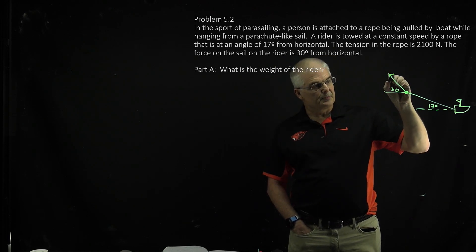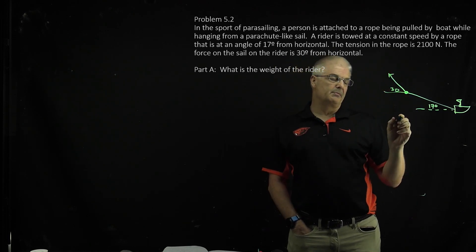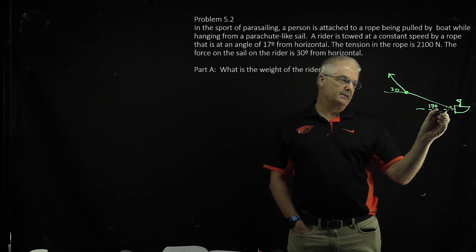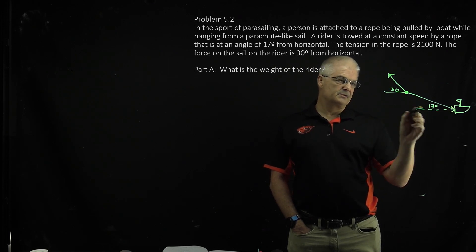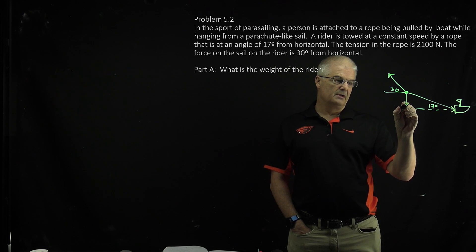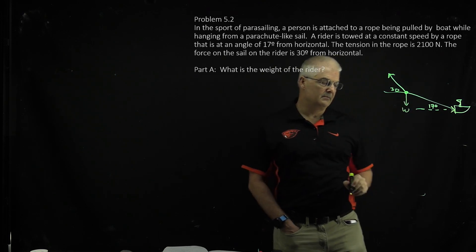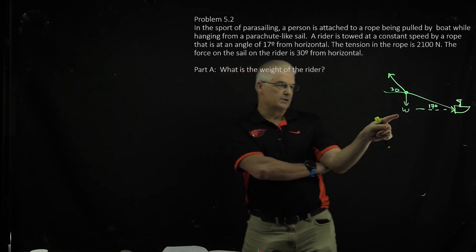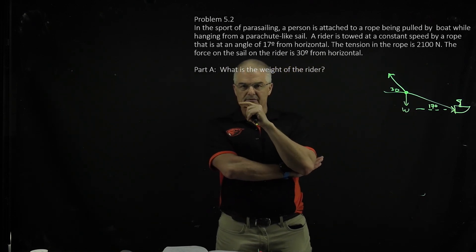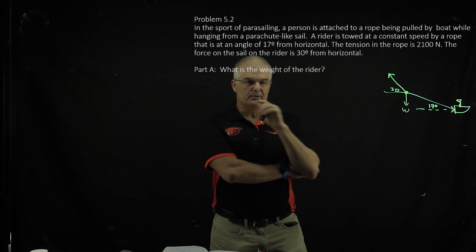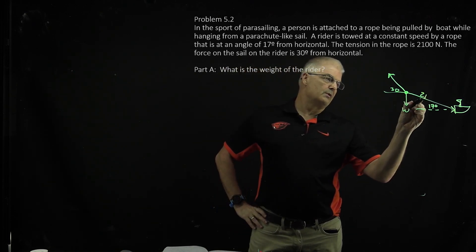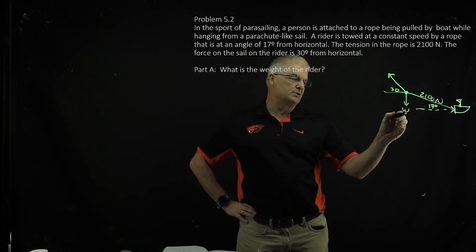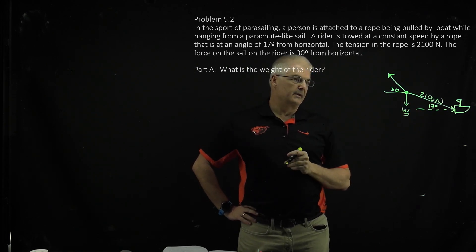So what's acting on the person is the parasail at 30 degrees, and then the tension comes this way. There's also the weight of the person. So the question is: what's the weight? We knew that the tension here was 2,100 newtons, so the question is what's the weight of the rider?